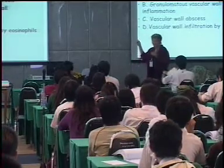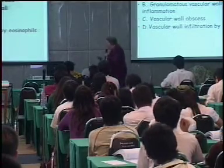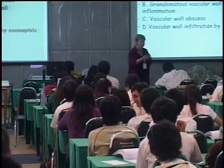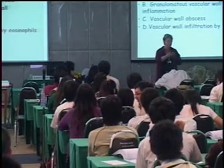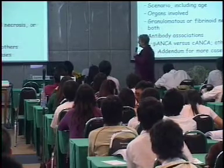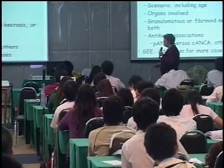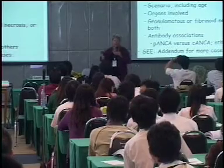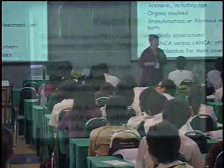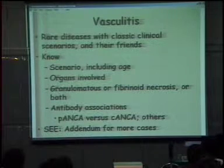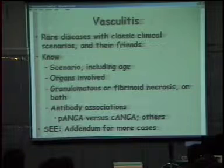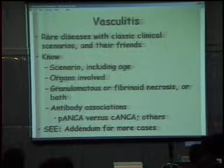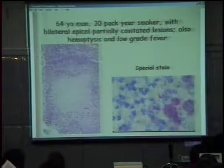This was the classical clinical scenario — it would have been much easier if I'd given you the diagnoses. They need you to know a second level of information. For vasculitides, the scenarios are very important. Perinuclear ANCA — anti-cytoplasmic antibody — is true in some forms of vasculitis, and C-ANCA is seen in Wegener's granulomatosis.